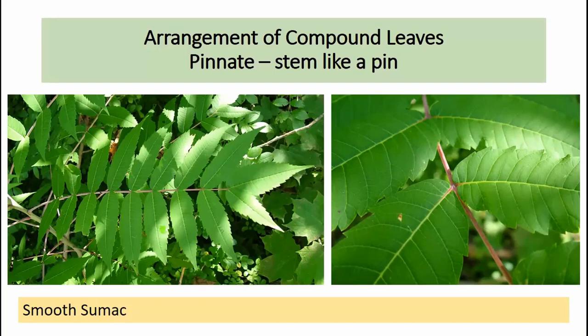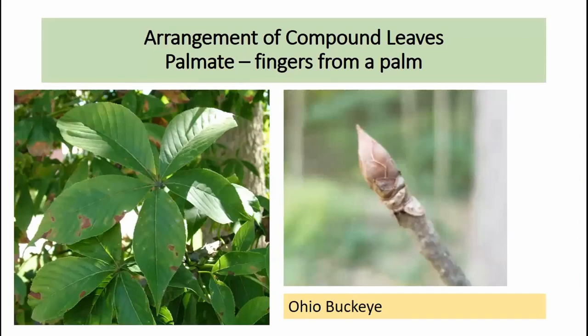There are a couple of different arrangements on compound leaves. Pinnate arrangement has a long leaf stem with leaflets along the edge and end — typical for ash, sumac, walnut, and hickory. We also have palmate compound leaf arrangement, where leaflets radiate from a central source at the end of the stem like fingers on a palm. One of our best examples in Indiana is Ohio buckeye.